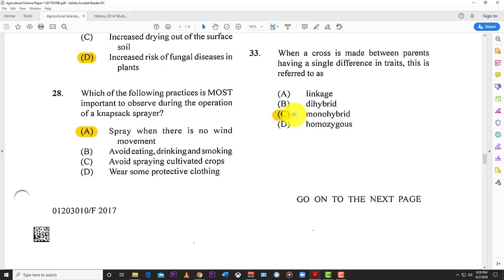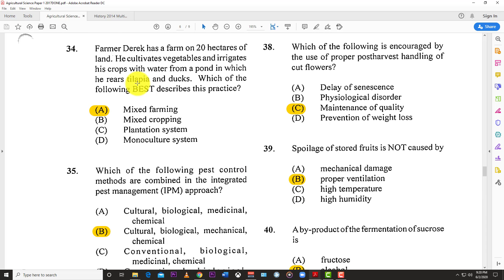Number thirty-two: Seeds are formed from B, fertilized ovules. Number thirty-three: When a cross is made between parents having a single difference in trait, this is referred to as C, monohybrid. Mono means one, single. Homozygous means all traits are the same, so you cannot be homozygous because there is a difference, but it's monohybrid.